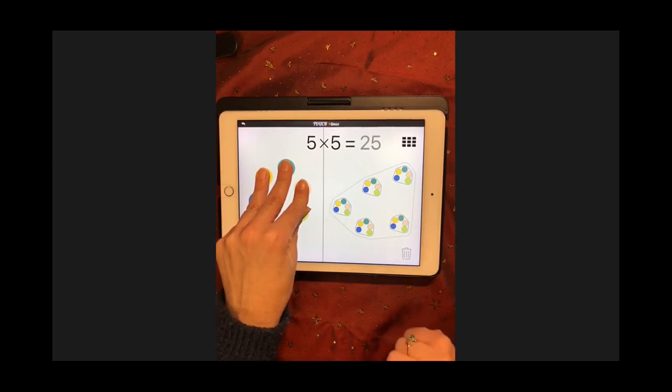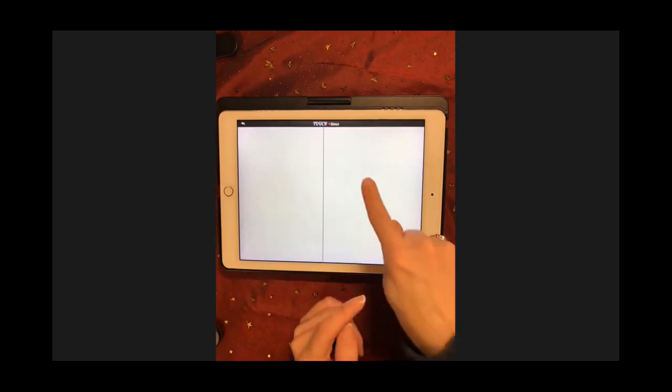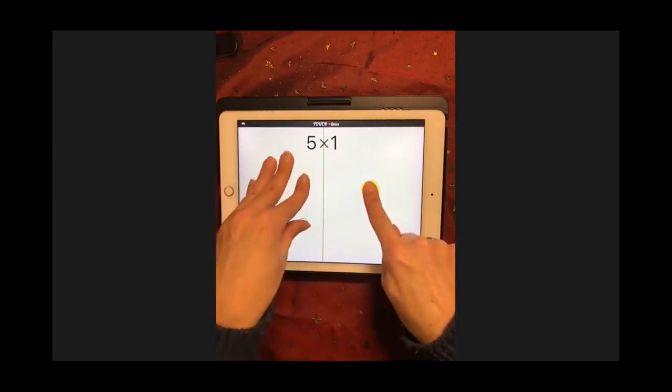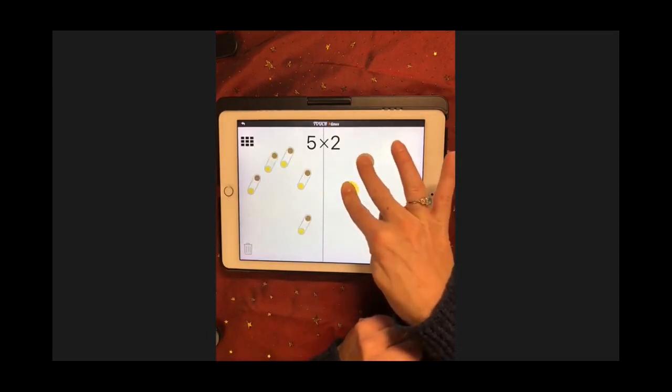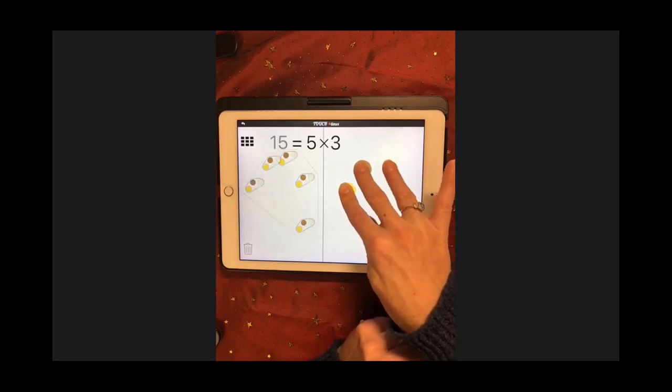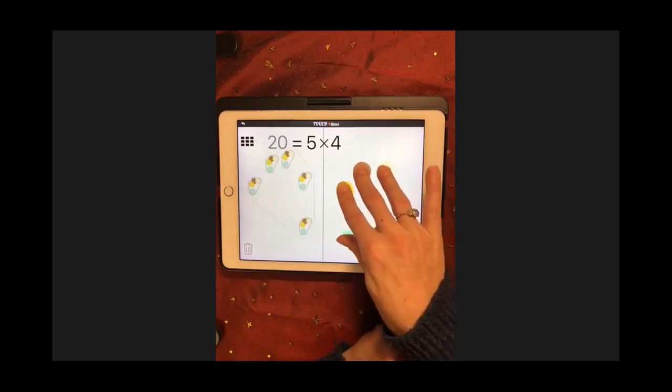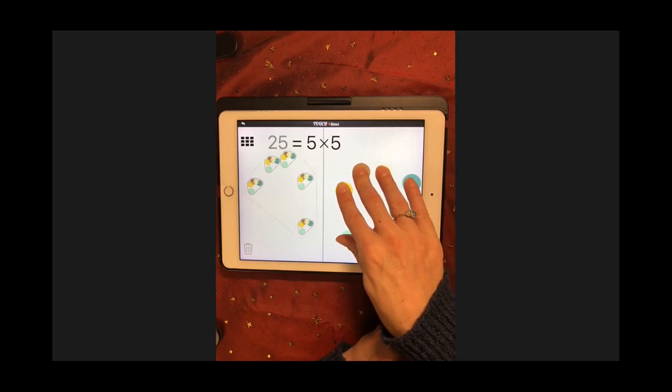I want you to skip count by 5 by changing the number of pips. In order for students to do that, they need to think about how many pips they're going to put down first and then how many pods they're going to put down. So in this case I need 5 pods. Right now my product is 5, 10, 15, 20, 25. How is skip counting by pips different than skip counting by pods?